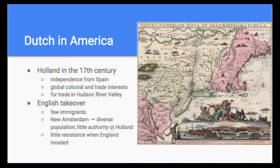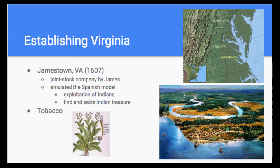Now we're going to talk specifically about English colonization. The first successful English colony in North America was established at Jamestown, Virginia in 1607, established by the Virginia Company of London, a joint stock company chartered by James I. The intent of the company was to emulate the Spanish model — live initially by exploiting the Indians and seizing Indian treasure. This model did not work because the Indians in the Chesapeake region were poor hunter-farmers, not like the large Inca and Aztec empires the Spanish encountered in South America.